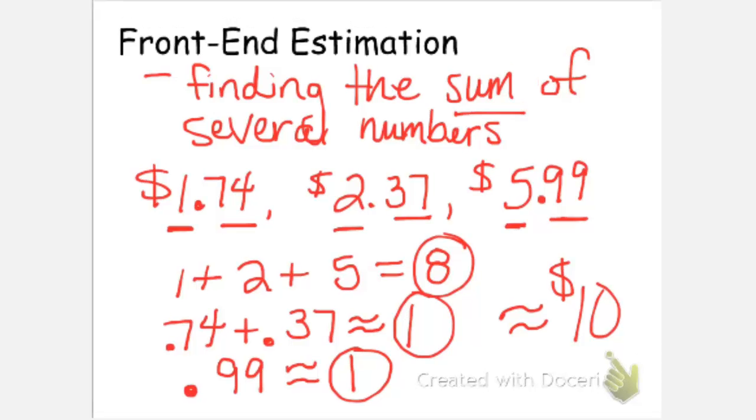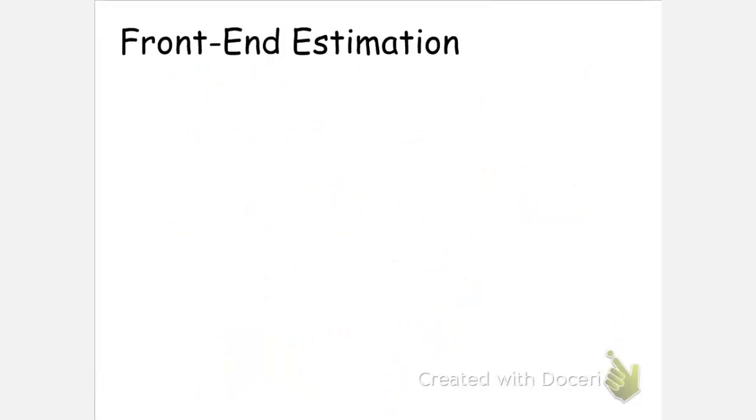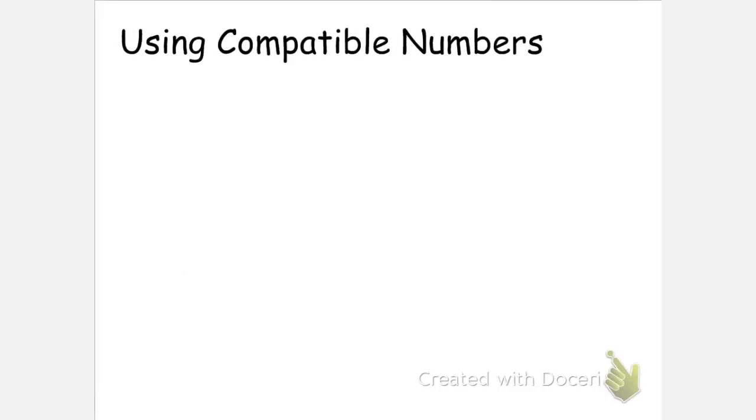Again, you might want to pause the video here. That's really all there is to front end estimation. If you'd like another example, you can check your textbook. The final type of estimation that I'm going to talk about is using compatible numbers. And this is used mainly in division.